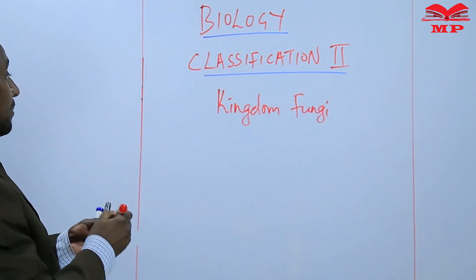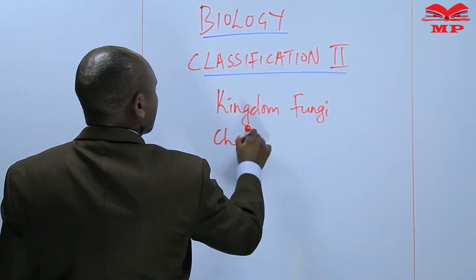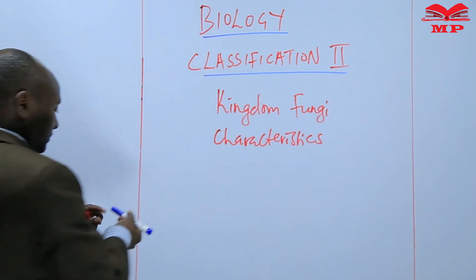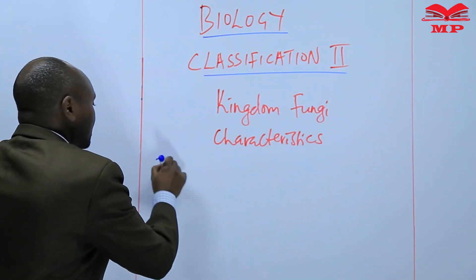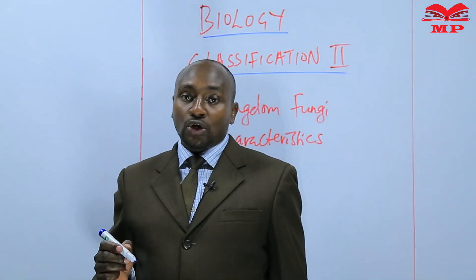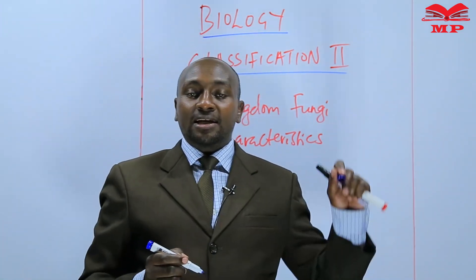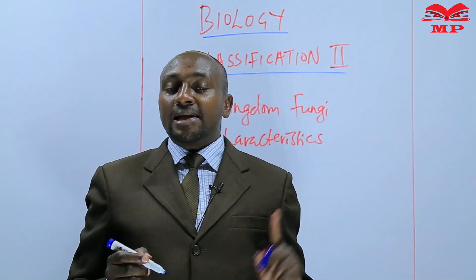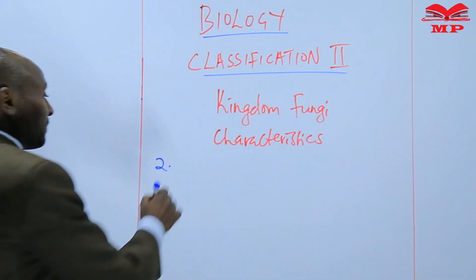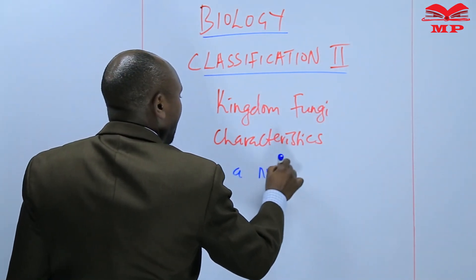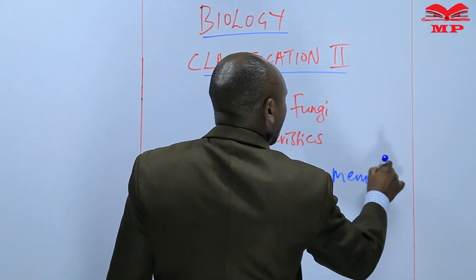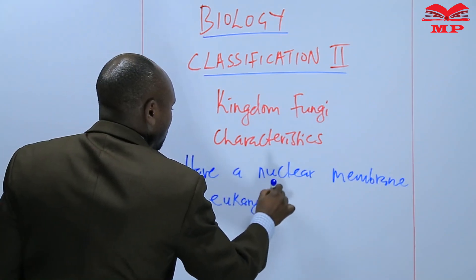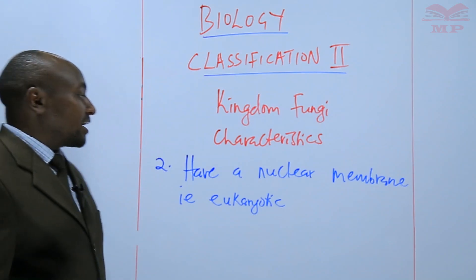So we are going to go to characteristic number two of kingdom fungi. Our number two characteristic is that fungi are eukaryotic. Eukaryotic is the term we saw when we were learning kingdom Protoktista, the earlier kingdom. The word eukaryotic means having a nuclear membrane, so even the members of kingdom fungi have a nuclear membrane, and therefore they are eukaryotic.